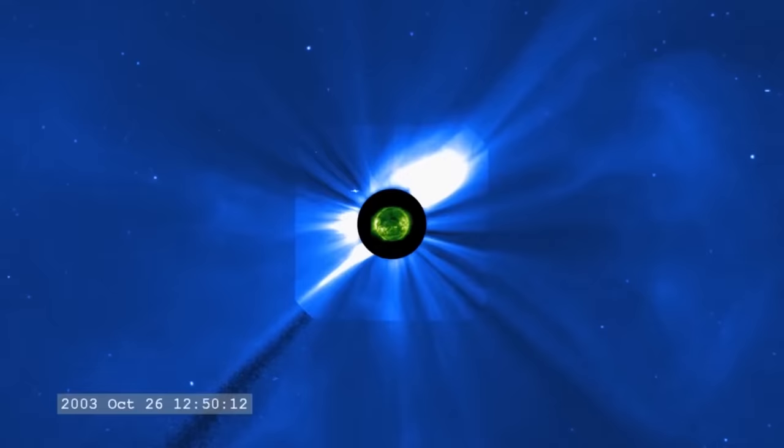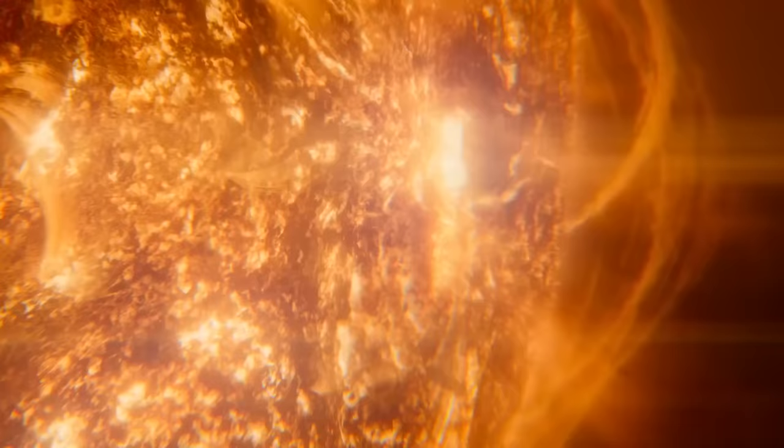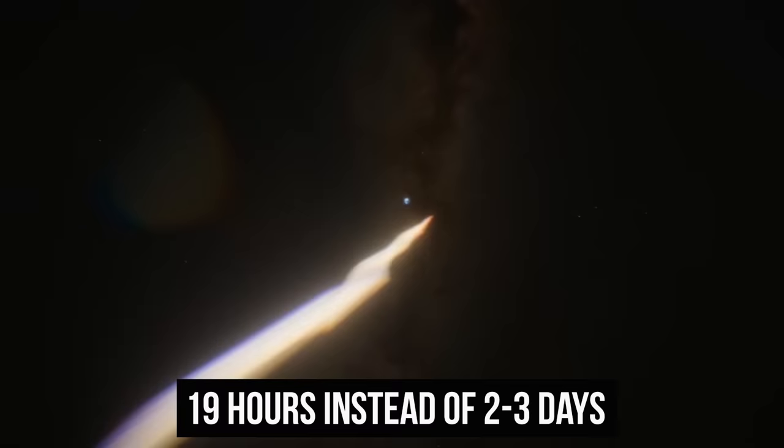We still don't know how powerful these solar flares actually were, since the equipment supposed to give us this information stopped at the maximum possible value and broke down. We can roughly imagine the force of the eruptions if we consider how fast magnetized plasma jets traveled from the sun to Earth. The way took them only 19 hours instead of the usual two or three days.